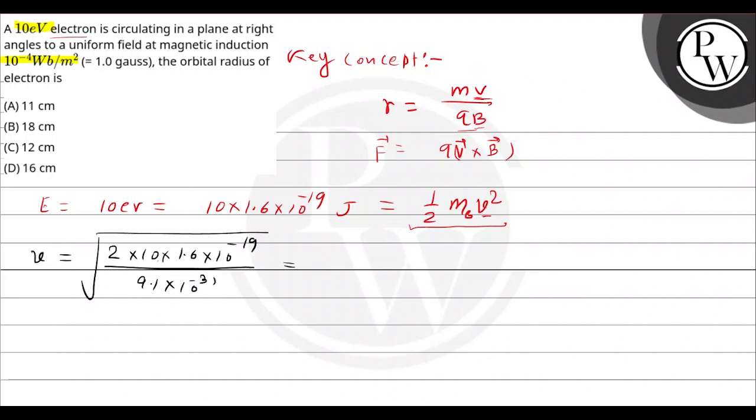This will be equal to 2 into 10 into 1.6 into 10 to the power minus 19 divided by 9.1 into 10 to the power minus 31. This is equal to 1.875 into 10 to the power 6 meters per second.